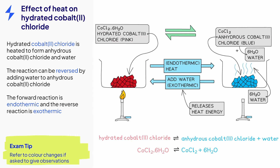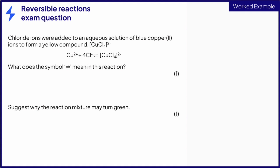Exam questions may focus on the observations made during this reaction. Examiners are expecting you to refer to the color changes associated with the reaction. In questions that ask for observations, many students incorrectly state what is produced instead of saying what they would see. Here is an example of a typical exam question involving reversible reactions. It contains a reversible reaction you will not have studied between copper ions and chloride ions, but you have the knowledge to answer it, so never be put off by unfamiliar reactions.